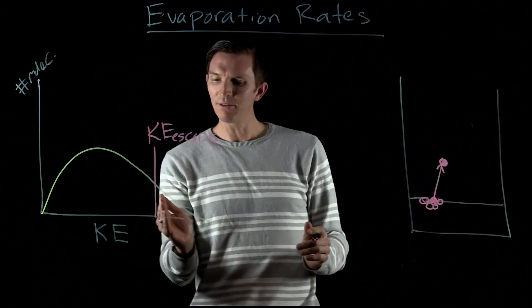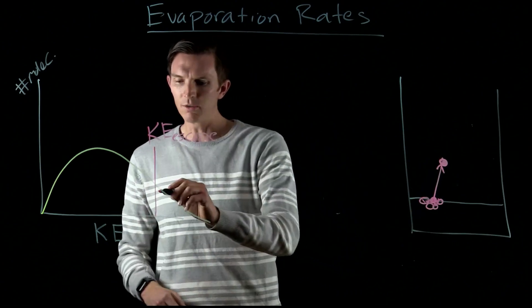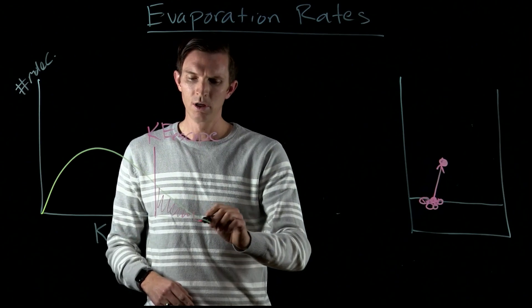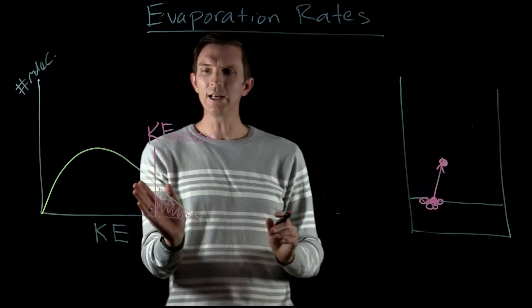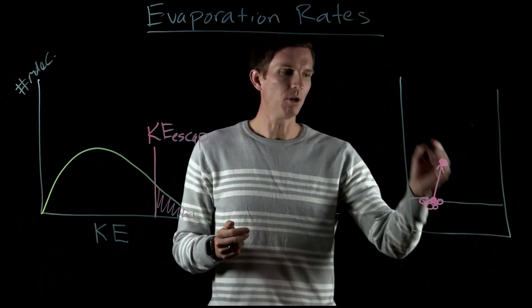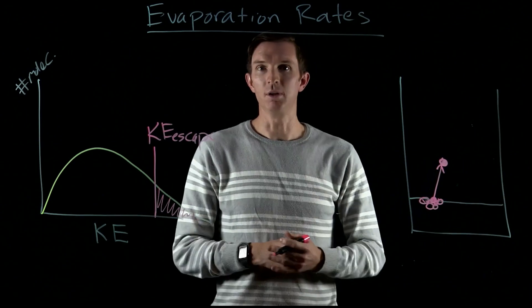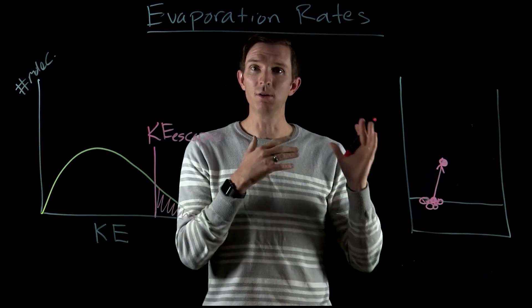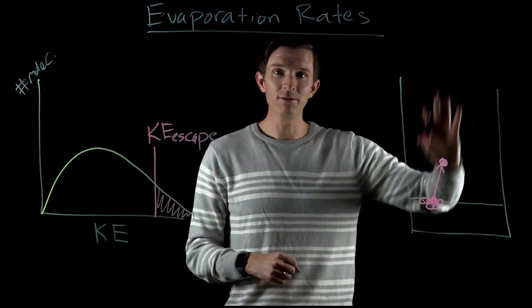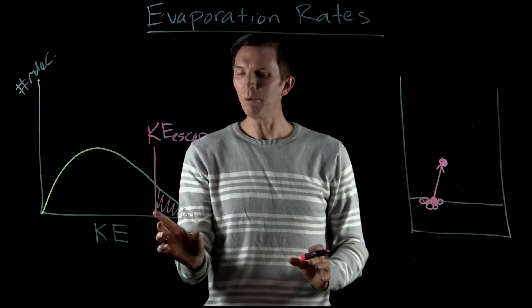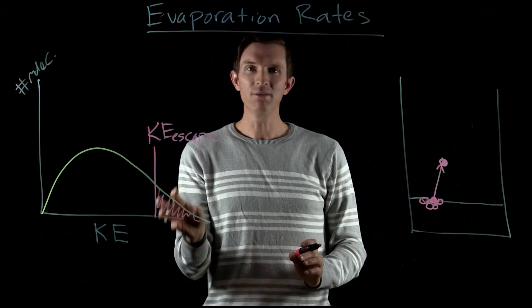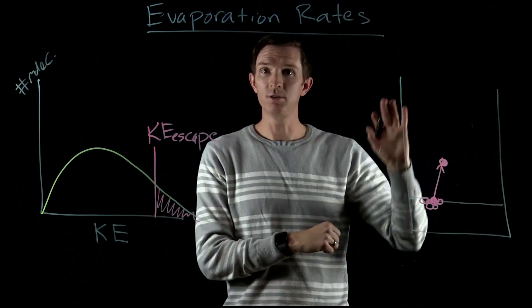If we have enough kinetic energy, any molecule with a kinetic energy greater than its escape kinetic energy is going to be able to leave. So whatever affects the rate of evaporation has to do with how many molecules have enough kinetic energy to escape.